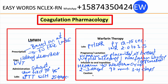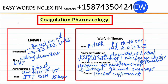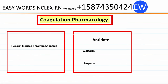Caution: instruct the client to use caution with herbal supplements such as ginger, garlic, arnica, or any similar supplements, because these increase the risk of bleeding when used with anticoagulants. Advise the client to avoid herbal supplements with anticoagulant properties when taking anticoagulants.